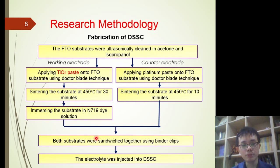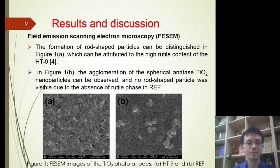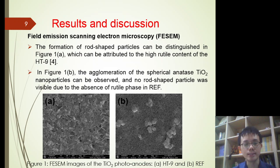After that, both substrates were assembled together using a binder clip, followed by injection of the electrolyte. For convenience, the DSSC based on the 9-hour hydrothermally synthesized titanium dioxide photoanodes was abbreviated as HD9, while the DSSC based on the commercial paste was denoted as the reference, or REF.